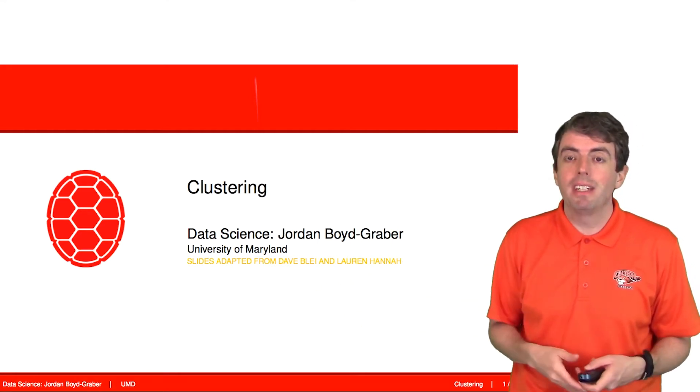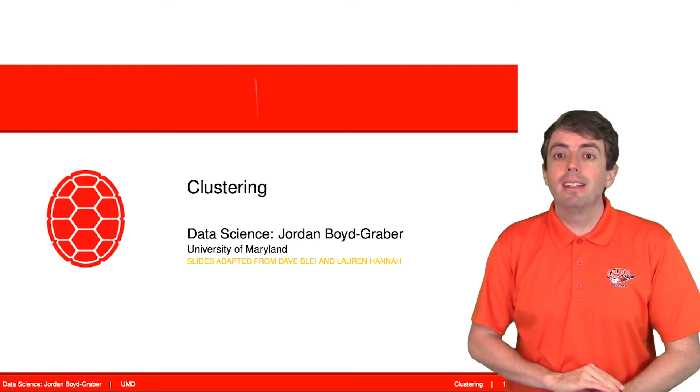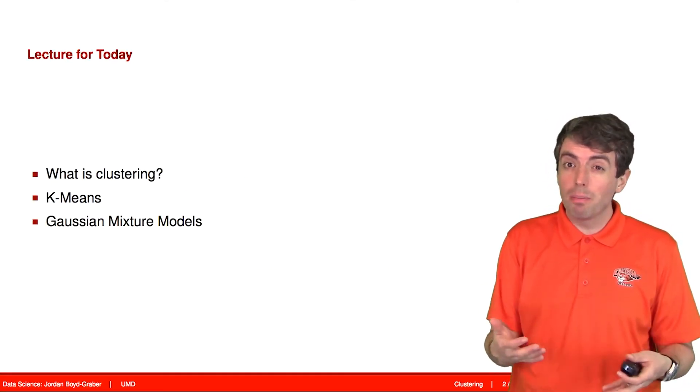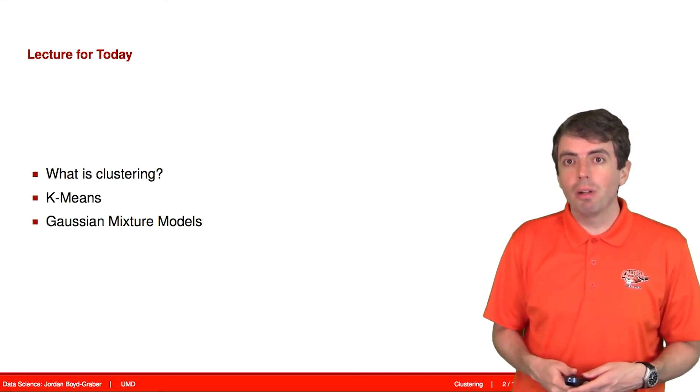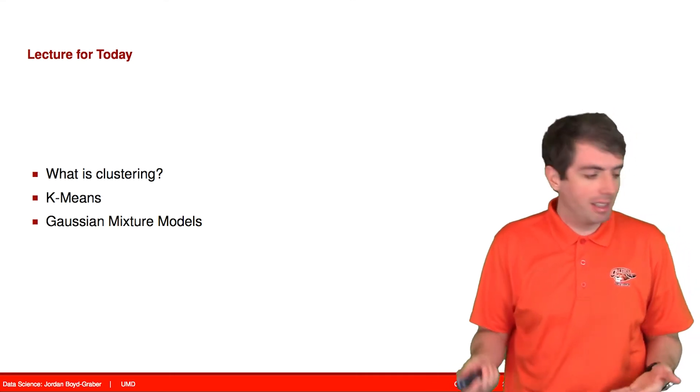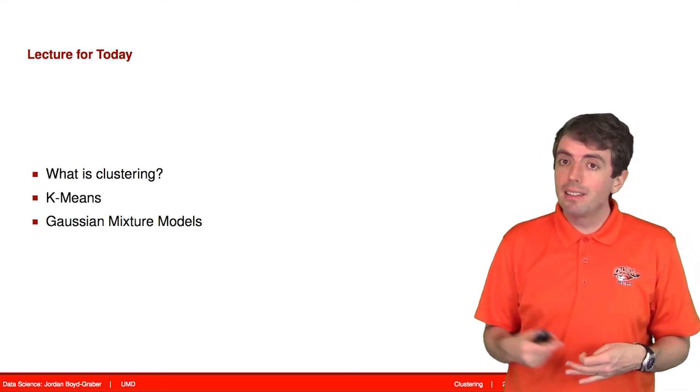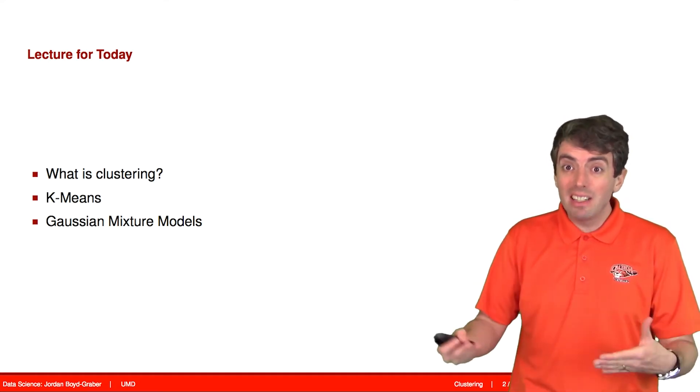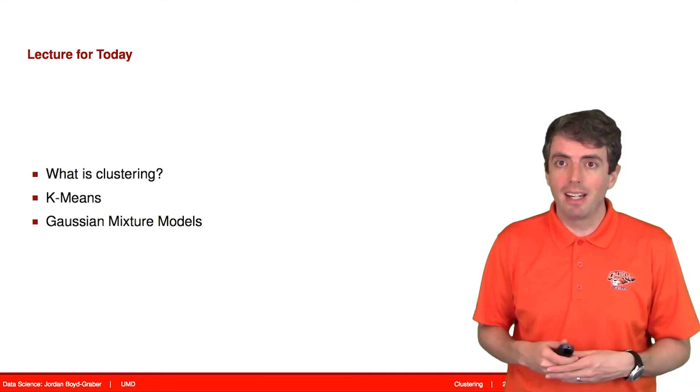What are the hidden z's that make up the data that explain what's going on? One way of doing this is clustering. Today we'll talk about what is the problem of clustering, one way of solving it called k-means clustering, and then we'll move on to a more probabilistic way called Gaussian mixture models, which is an extension of k-means to a probabilistic setting.